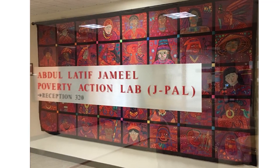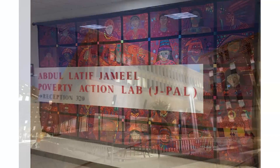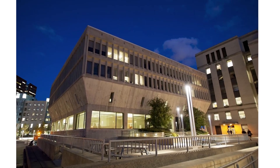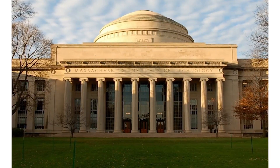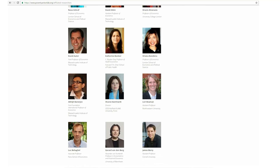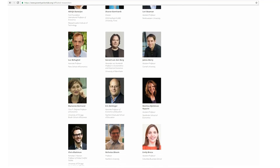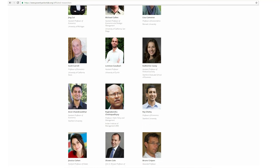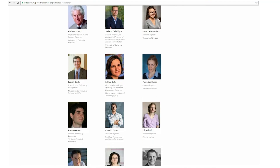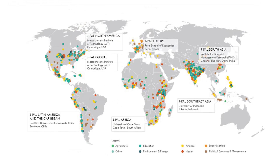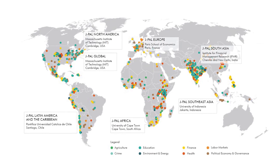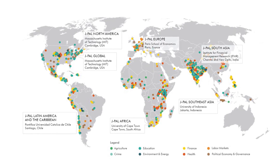J-PAL was established in 2003 as a research center in the economics department of MIT. But more importantly, it is a network of social science faculty researchers at universities all over the globe. And together, they have conducted about 1,000 randomized evaluations in 70 countries.